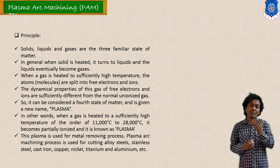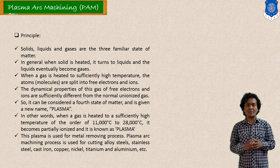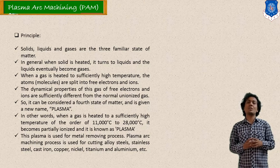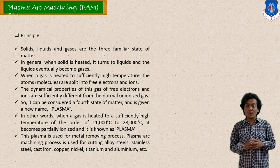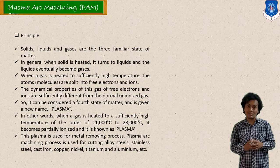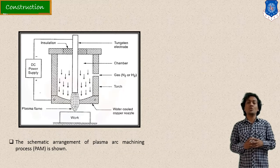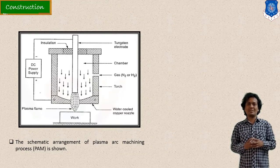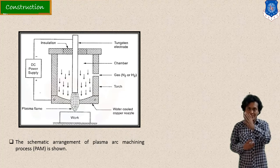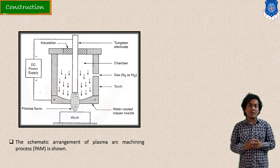So this ionized gas is nothing but the plasma state. Plasma is considered a fourth state of matter, along with solid, liquid, and gas. When you heat up the gas, plasma can be generated, and at this high temperature, plasma can also work as a heat source. With this principle, we look forward to plasma arc machining — with the help of this plasma arc, we can do machining.